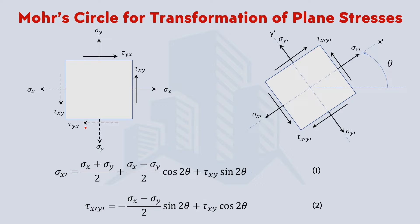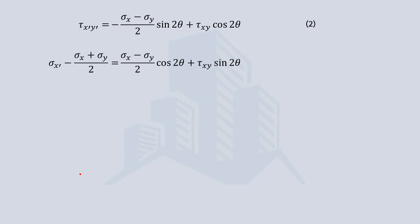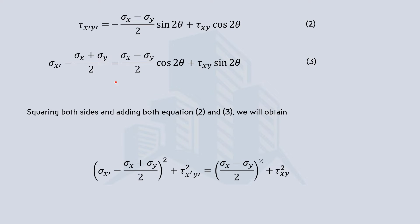In equation number one, if we shift one term to the left-hand side, we get a new form — let's call that equation number three. Now squaring both equations on both sides and adding them together, we obtain a new relationship. When we add these two squared equations, with the help of some trigonometric identities we can arrive at a simplified form.